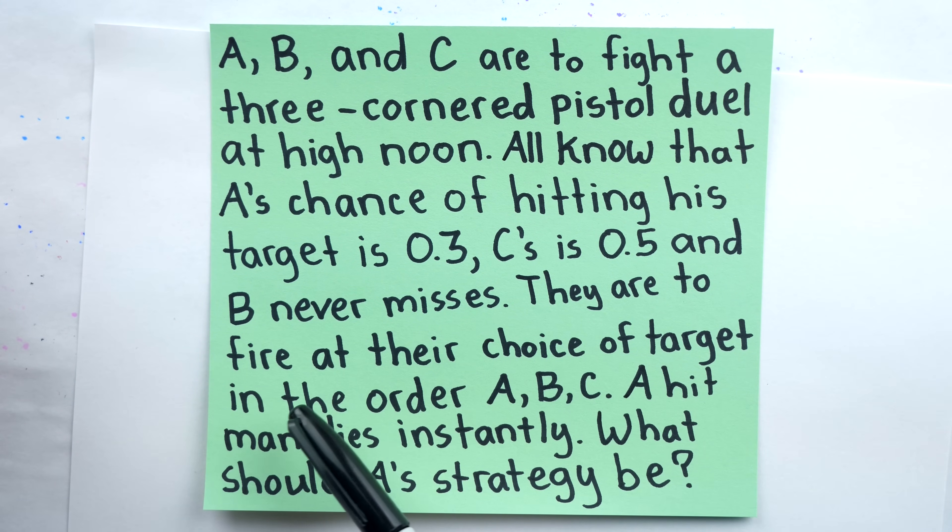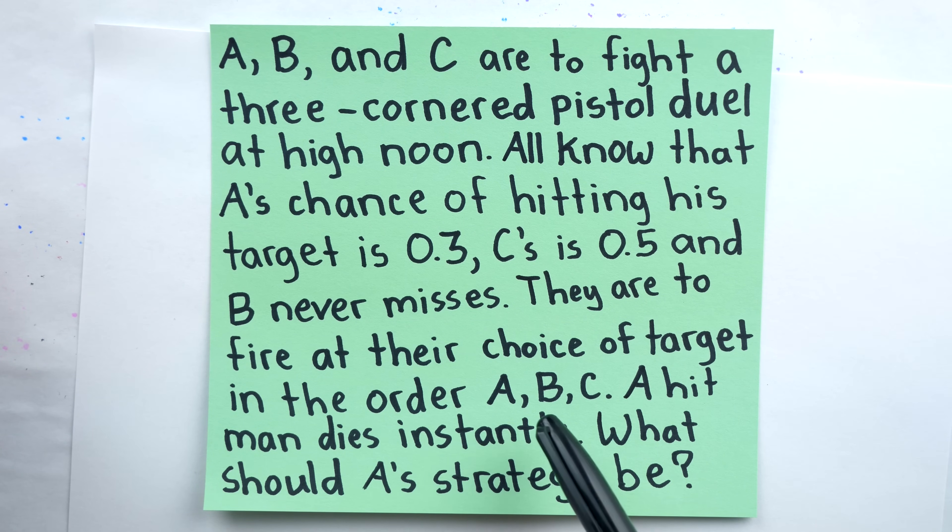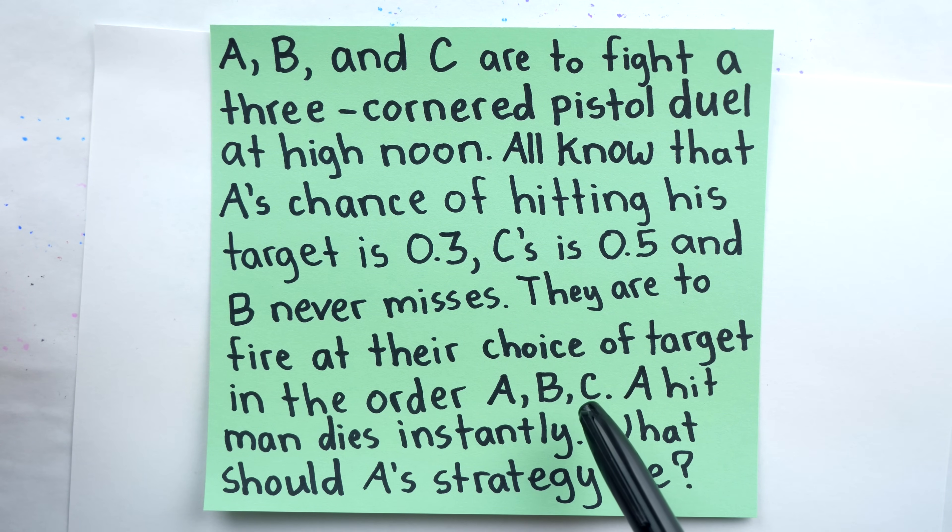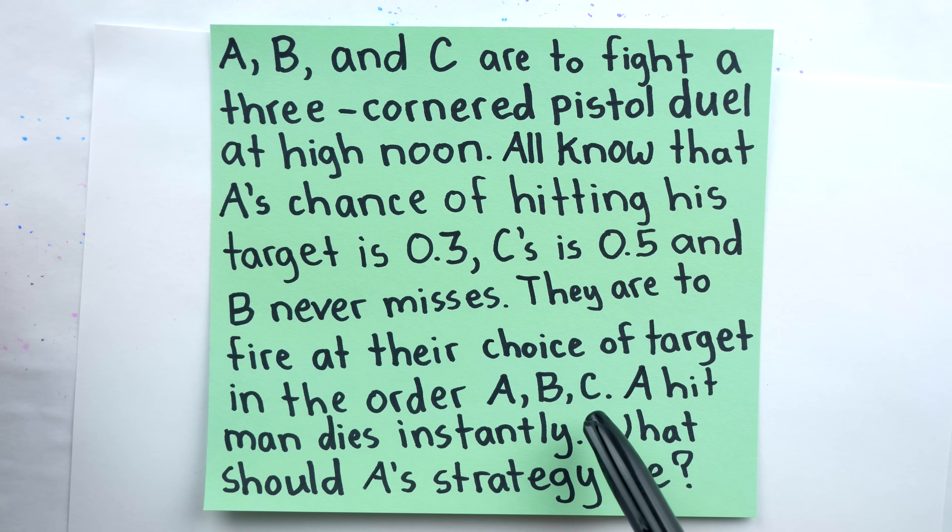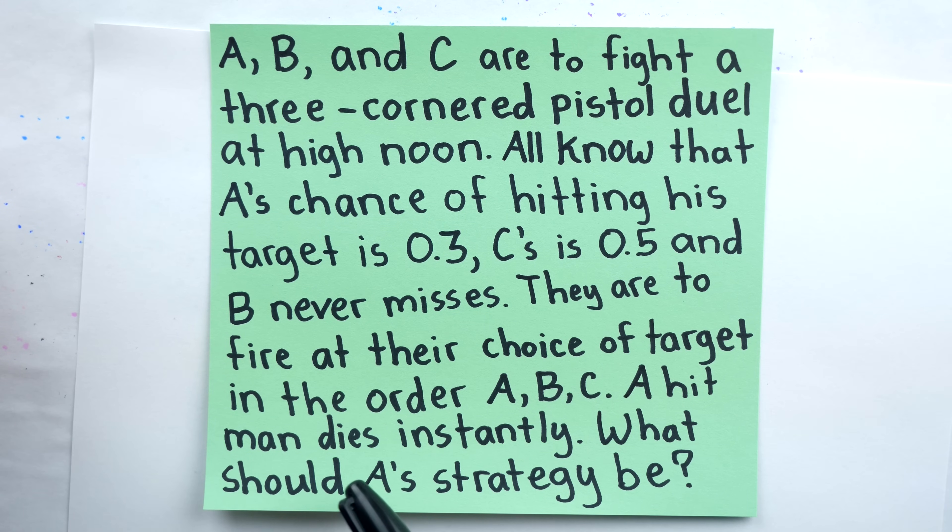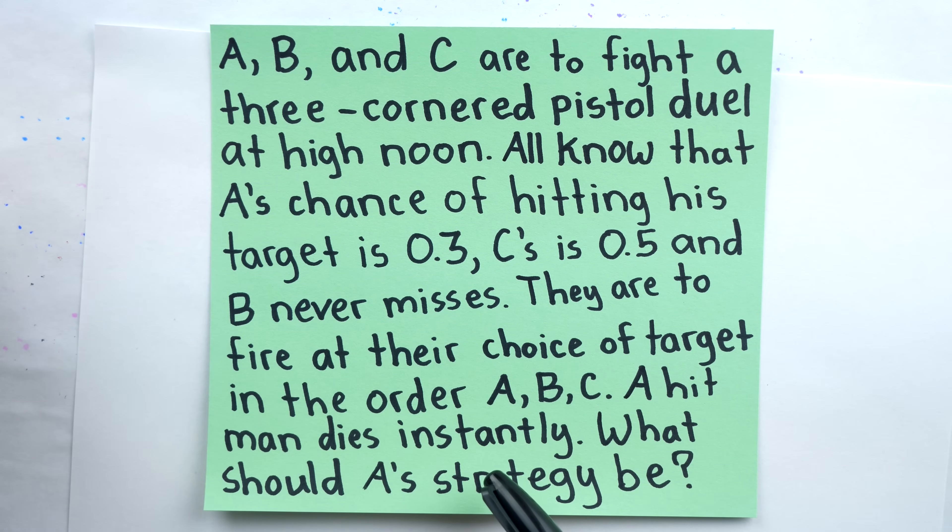They are to fire at their choice of target in the order A, B, C, so politely they're taking turns here. A gets first shot, then B, then C. A hit man dies instantly, so if somebody hits another person, that person is dead, they're out of the game.